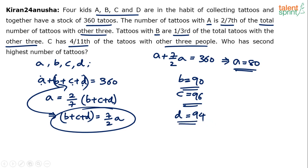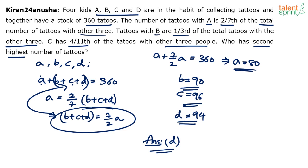Now read the question properly — many of you will go wrong in the final step. Who has the second highest number of tattoos? He's not asking for the highest. Highest is 96, second highest is 94. So the answer should be D. The second highest number of tattoos are with D, which is 94. Similarly, be careful about lowest, second lowest, third lowest — you cannot go wrong just because you misread the question. Answer is D with 94 tattoos.